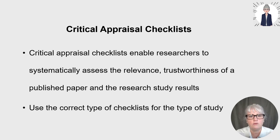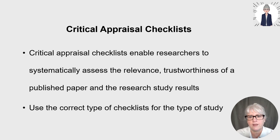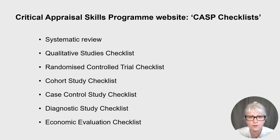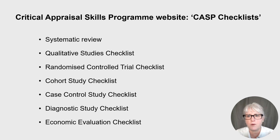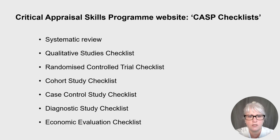In a dissertation or thesis, you'll need to include the reference of the appraisal checklist you've used, and you usually present a table in literature reviews that summarises your appraisal of key research studies with headings linked to the checklist. The first resource I suggest is the Critical Appraisal Skills Programme website — the CASP checklist. This is an internationally renowned resource for researchers, with free downloadable checklists for systematic reviews, qualitative studies, randomised control trials, cohort studies, case control studies, diagnostic studies and economic evaluation studies.